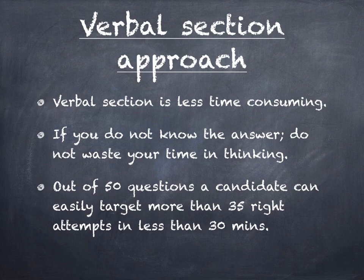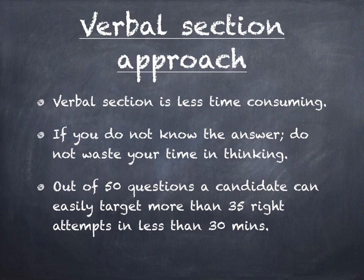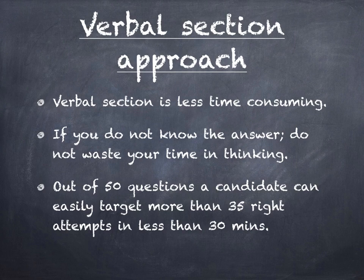In the verbal section, for a sentence correction question, you read the sentence and either you know the answer or you don't. That's the best part of verbal in CET — it won't consume much time. If you are good in verbal, in 25 minutes you can easily target more than 30 correct answers out of 50. There is no negative marking, so attempt all questions. This analysis is based on CET 2018; in 2019 we can expect minor changes but nothing on a larger scale.